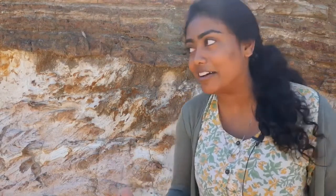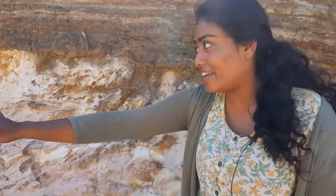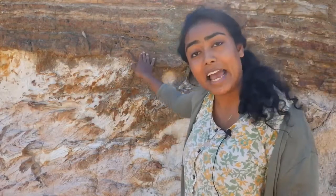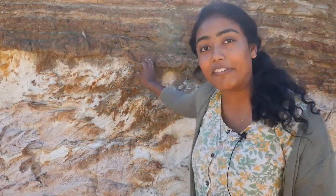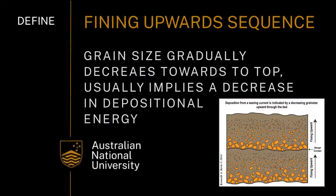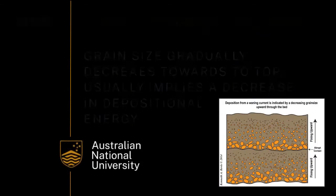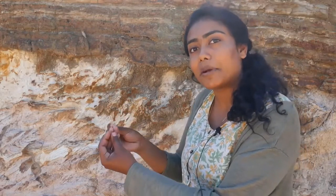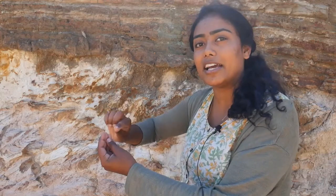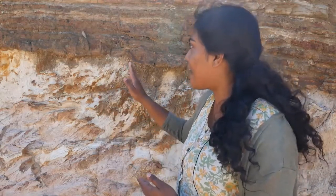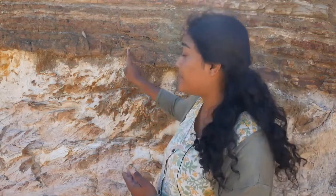It's kind of hard to see on camera, but in other places along this outcrop, in this sandy layer, you can actually see a fining-up sequence. You can see within beds of sandstone that at the base of the bed the grains start out as coarse and they become finer and finer as you go up in a gradual manner. And so that indicates that way is up.